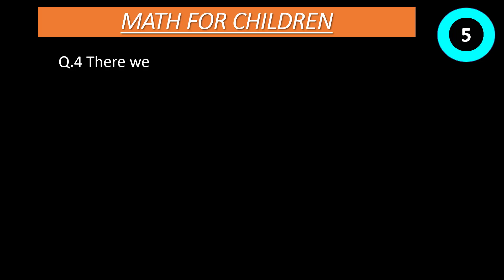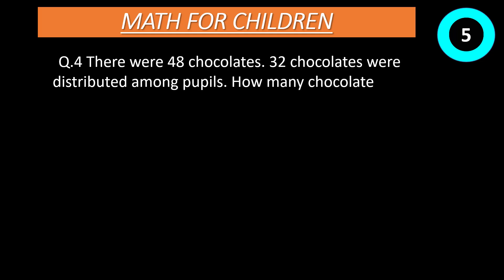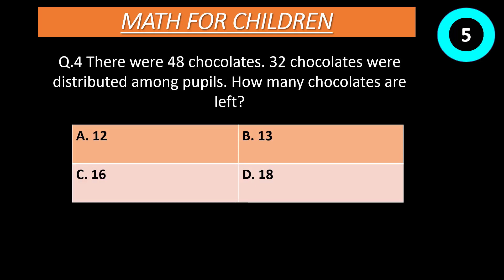Question number 4: There were 48 chocolates. 32 chocolates were distributed among peoples. How many chocolates are left? Option A: 12. Option B: 13. Option C: 16. Option D: 18. Time start now. Correct answer is C, 16.